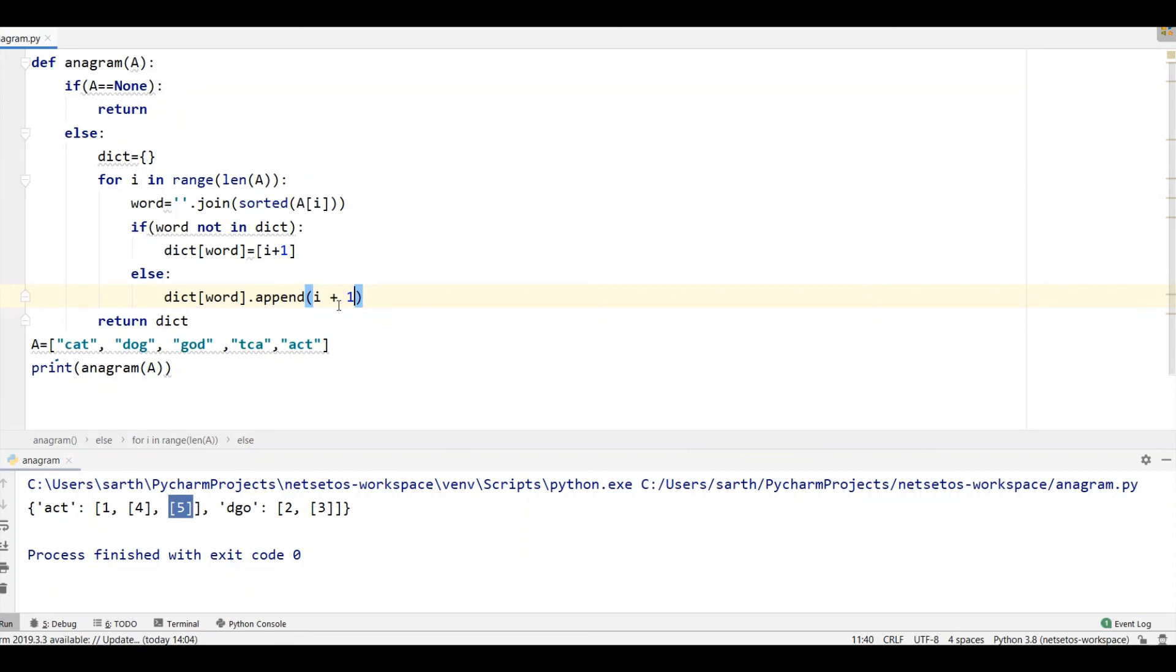Append function itself returns in list form. So, you don't make this mistake. And this is the output which I wanted. Our output is in dictionary. First act with our indexes 1, 4 and 5.